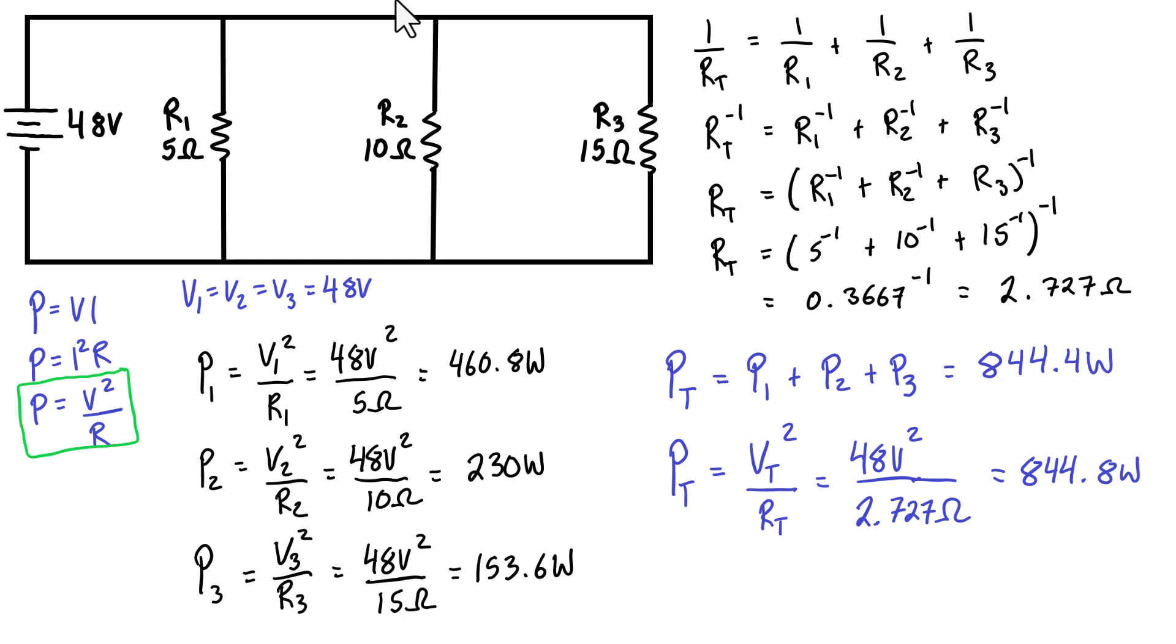That 0.4 watt difference is just rounding somewhere in the problem, but basically we get 844 watts, so this checks out. If you watched the previous video where we determined power consumption in a series circuit with the same 48 volt source and 5, 10, and 15 ohm resistors in series, when we have them in parallel the power consumption in each resistor goes up quite a lot higher, and the total power consumption is higher when these resistors are in parallel compared to in series.